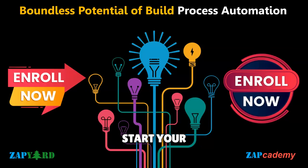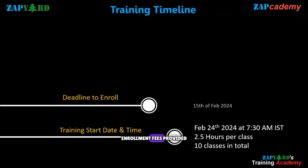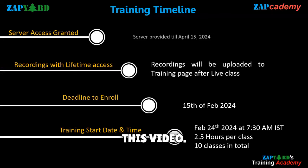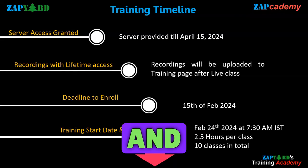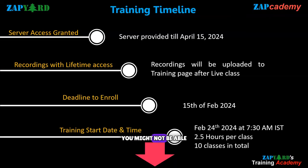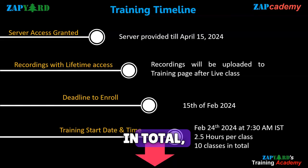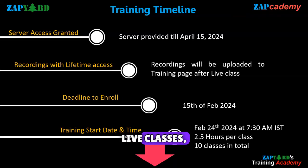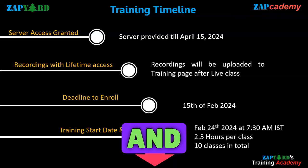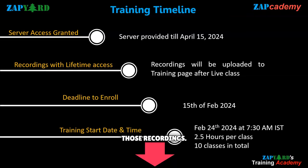Do not think further — just enroll today and start your SAP Build Process Automation journey. The details of the training, dates, time, and enrollment fee are provided in the description section of this video. Please note that this is a weekend-only course, and if you are in Europe, Africa, or West Asia, you might not be able to join the live classes. This time suits better for participants from the Indian subcontinent, East Asia, Australia, New Zealand, and North and South America. There will be 10 classes in total, each more than 2.5 hours. If you are not able to join some live classes, recordings will be uploaded to our training page and participants will have lifetime access to those recordings.